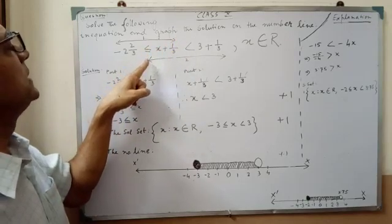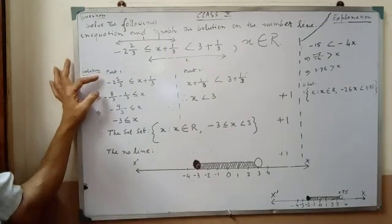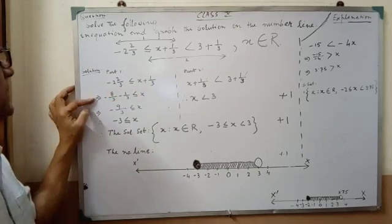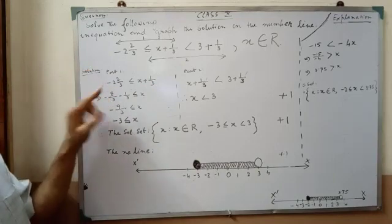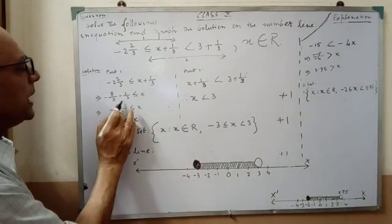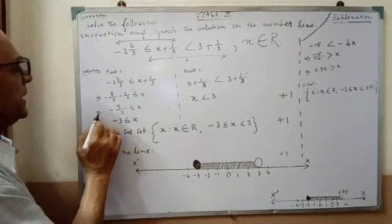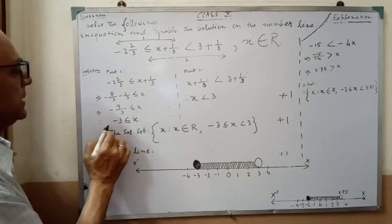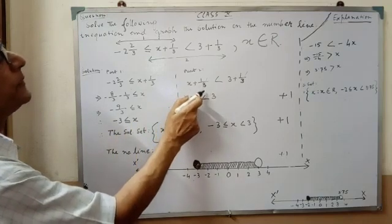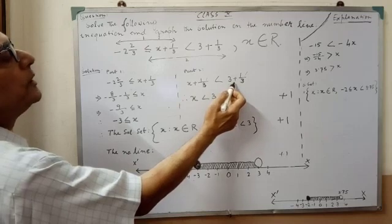The second part starts from the first inequality sign to the end. For Part 1, the solution is: minus 2 and 2/3 less than or equal to x plus 1/3, which gives minus 8/3 minus 1/3. For Part 2: x plus 1/3 less than or equal to 3 plus 1/3, and since 1/3 appears on both sides of the inequality sign, it will be cancelled.